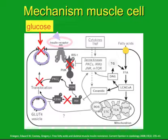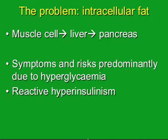This publication clearly demonstrates that the receptor can no longer function when there are high levels of insulin and fatty acids in the cell. Intercellular mechanisms are blocked as well, so intracellular fat is the problem — seen first in muscle cells, then the same vicious cycle takes place in the liver and then the pancreas. The symptoms and risks due to GDM, type 2 diabetes, or diabetes are predominantly due to hyperglycemia and reactive hyperinsulinemia.